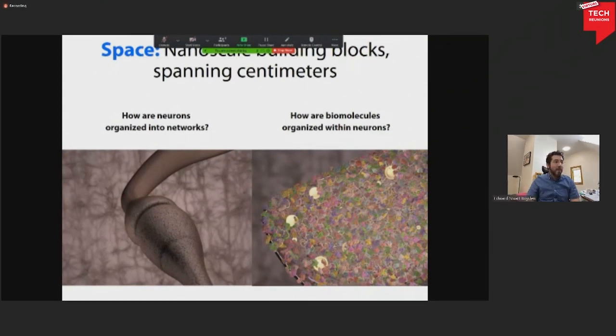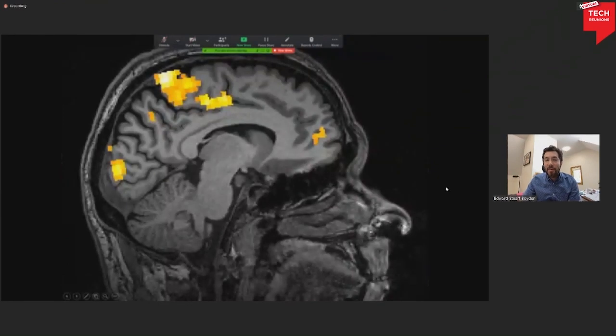So let's start with space. How can we understand how brain cells are organized into these vast networks, and how these tiny nanoscale molecules are organized into brain cells? Well, I think we've all seen sort of brain scans, things that look like this picture here. This is an MRI scan.